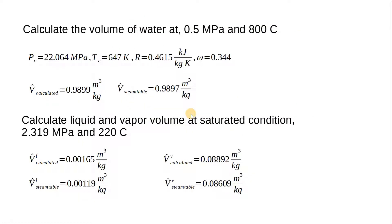We can understand this further by taking a problem. We want to calculate the volume of water at 0.5 MPa and 800°C. The pressure is very low and the temperature very high, so water is superheated vapor. The critical temperature and critical pressure of water are given, along with R — the particular gas constant for water, obtained by dividing the universal gas constant by the molecular weight. The acentric factor omega for water is 0.344.